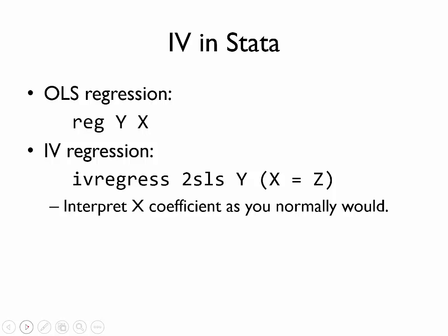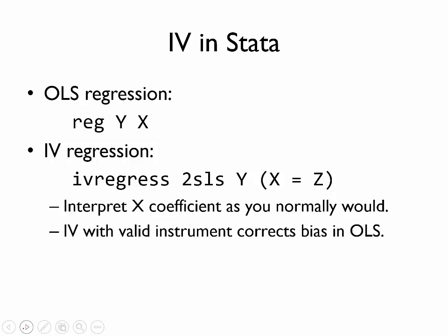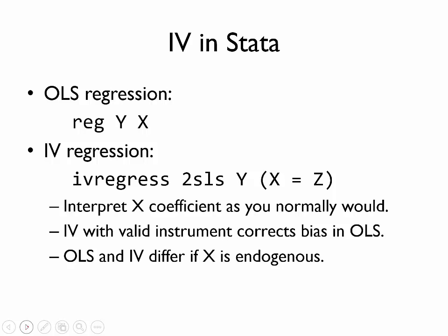Once we estimate this model, you should see output which looks quite similar to OLS regression output, and we can interpret the x coefficient as we normally would. The difference is that if we have a valid instrument z, then the estimated x coefficient can now be interpreted causally, meaning we should have removed any bias from OLS — again, as long as that instrument is valid. One corollary is that if we have a valid instrument and x was in fact endogenous, then the OLS and IV estimates of the x coefficient should be different. If we find they are the same, that could mean that x was not endogenous despite our suspicions.